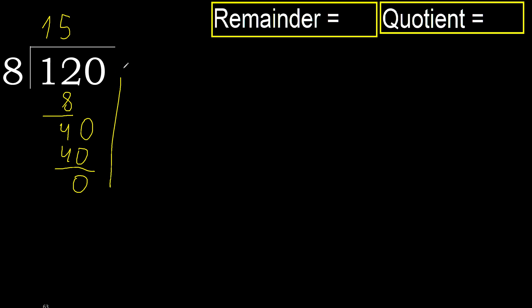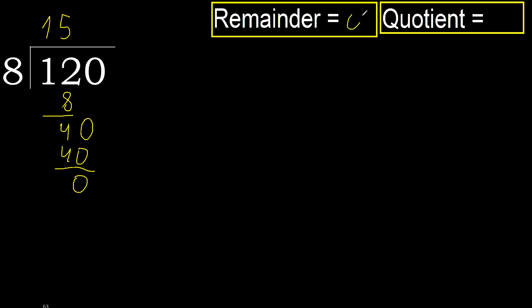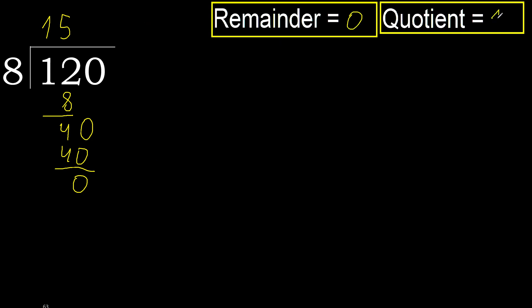Next — that is not a number, therefore finish it. 120 divided by 8 is 15. Ok.